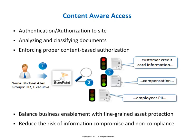For example, access to a document posted in a SharePoint portal by mistake can be prevented dynamically by CA SiteMinder based on the sensitivity of the data. This can help ForwardInk to balance business enablement with fine-grained asset protection and reduce the risk of information compromise and non-compliance.